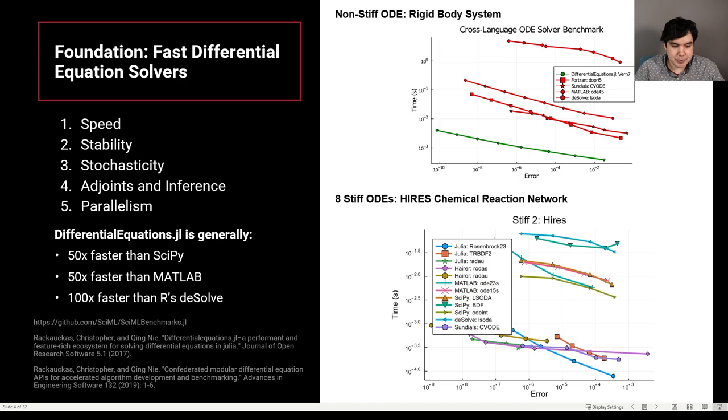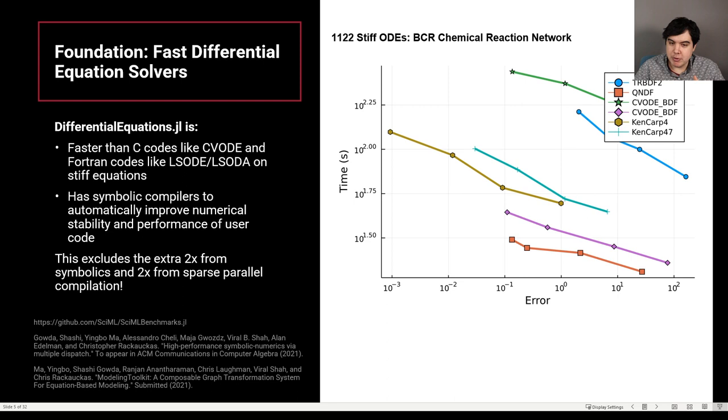This is something that we see even on very large equations. Here we see the 1,122 stiff ODE model, which is the interaction network. The fastest codes on this, even when trying to make use of faster BLAS like MKL with sundials, are the ODE solvers from differentialequations.jl, this QNDF here. It seems to be faster than C codes and FORTRAN codes, and this even excludes a lot of the benefits from Symbolics and Sparse Parallel Compilation. So our baseline is something that is extremely fast.